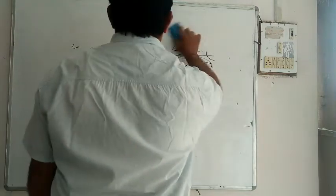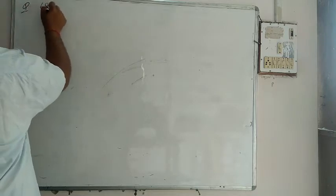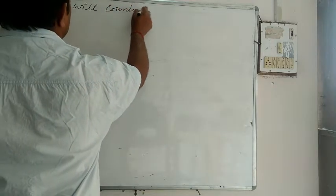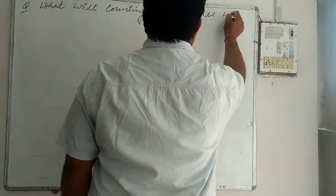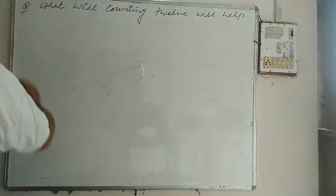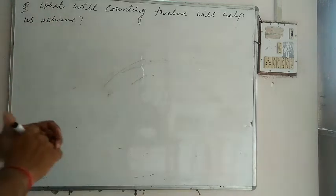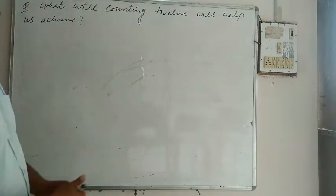Now I would like to tell you the questions related to the poem. And later on definitely we go through all the important figure of species as well in the poem because there are so many images involved in this poem. So your question is, what will counting twelve will help us achieve?